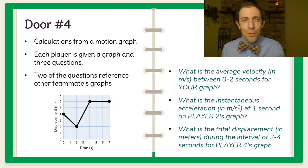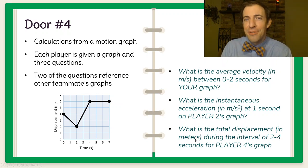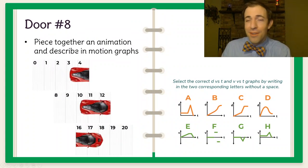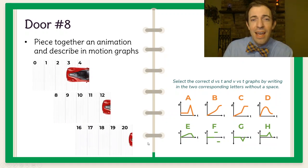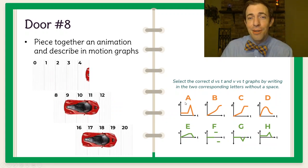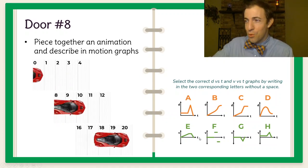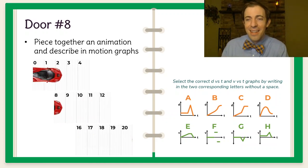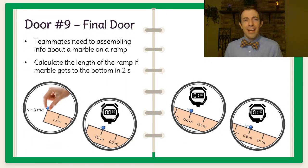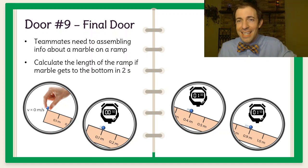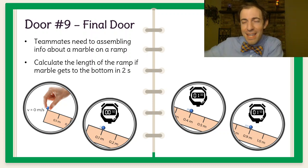Then it continues on in a variety of different ways. Door four has graphs where they each have a different graph and then three questions one question about their own graph and then two questions about someone else's graph that they need to communicate with each other and help each other out to solve their own problems. Some doors like door eight each person has part of a scenario in this case an animation and then the fourth player has a bunch of different motion graphs that they need to determine a displacement and a velocity graph that depicts the entire motion of this car. And then door nine the final door they have to figure out the length of a ramp for this marble to roll down in two seconds, but they all are looking through a peephole to see one part of this. When they submit this final door they get a confirmation code that they then submit to the teacher.